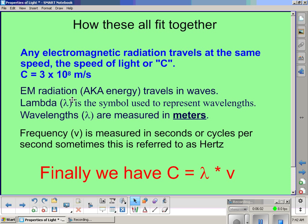Let's move on. Electromagnetic radiation, also known as energy, travels in waves. We've already talked about that. Lambda, this funny-looking upside-down Y, is the symbol used to represent wavelengths in equations. Wavelengths, lambda, they're measured in meters. So quite often we'll be given in a word problem nanometers or centimeters or what have you. You need to convert those to meters before you do your calculations. Frequency, V, is used to represent frequency, it's measured in seconds or cycles per second. And as I mentioned just a minute ago, it's sometimes referred to as hertz. Cycles per second is the same as hertz.